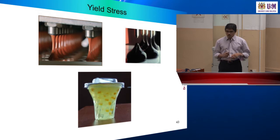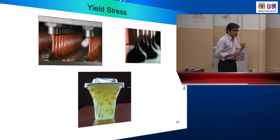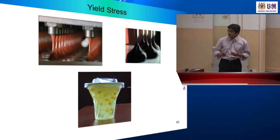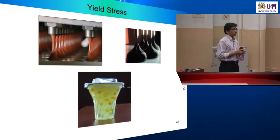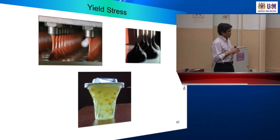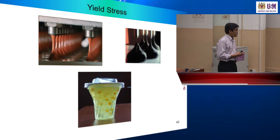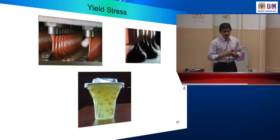From these examples, we can see that different food materials display different flow behavior. We want to describe the different flow behavior in terms of the viscosity of the material. What is the significance of the different types of flow behavior — the implication of this in the food industry, in food processing, and in food formulation when we use different types of ingredients?